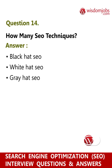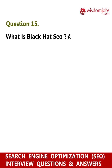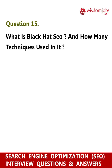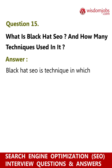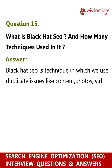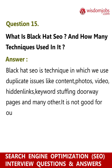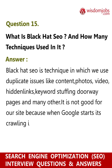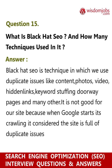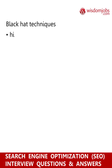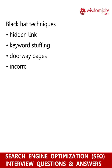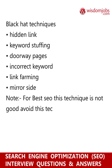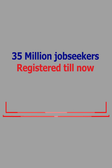Question 15: What is black hat SEO and how many techniques are used in it? Answer: Black hat SEO is a technique in which we use duplicate issues like content, photos, video, hidden links, keyword stuffing, doorway pages, and many others. It is not good for our site because when Google starts its crawling, it considers the site as full of duplicate issues and penalizes the site — minimum plus 30 Google page ranking drop. Black hat techniques include hidden links, keyword stuffing, doorway pages, incorrect keywords, link farming, and mirror sites. For best SEO, this technique is not good — avoid this technique.